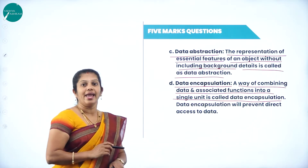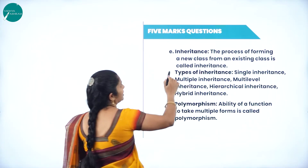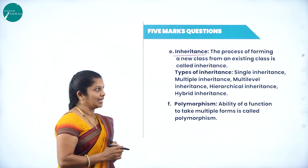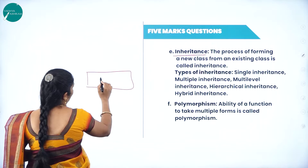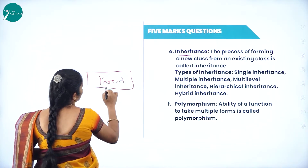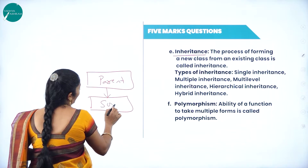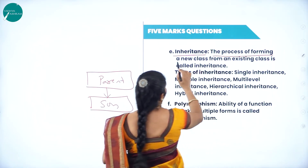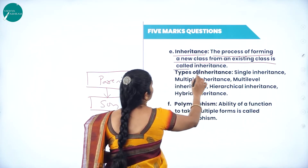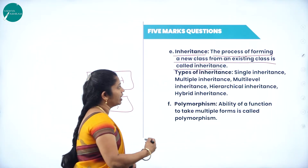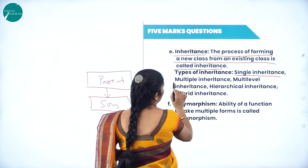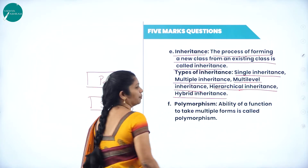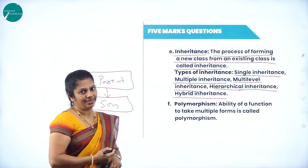The next feature is inheritance — a process of acquiring, or forming a new class by using an existing class. The parent class inherits its properties to the son; that is, the son takes the properties of the parent. The types of inheritance are: single inheritance, multiple inheritance, multi-level inheritance, hierarchical inheritance, and hybrid inheritance.